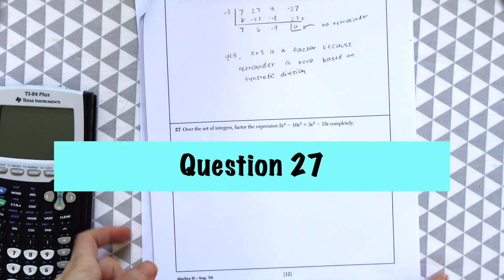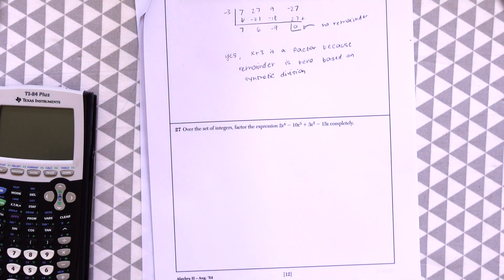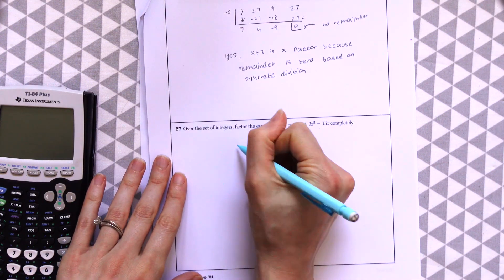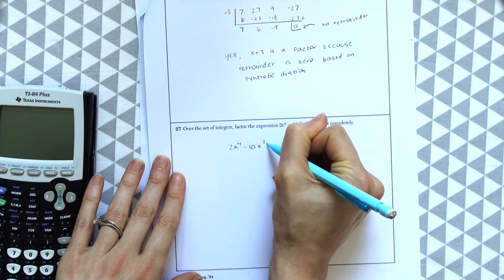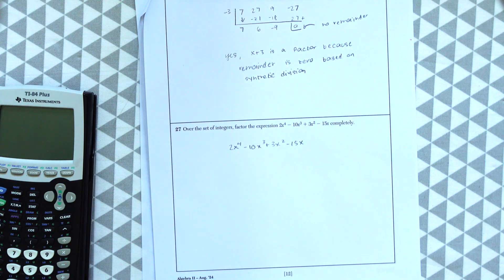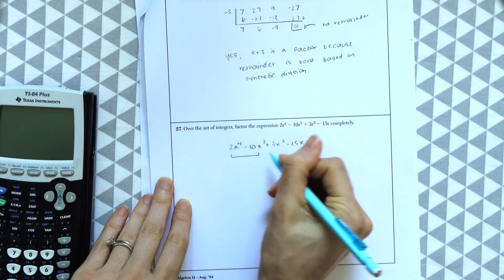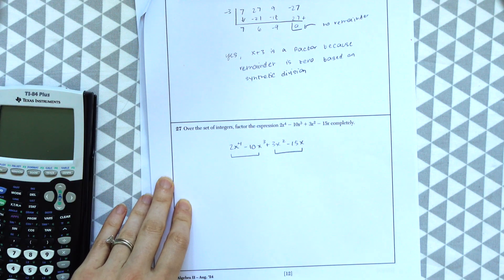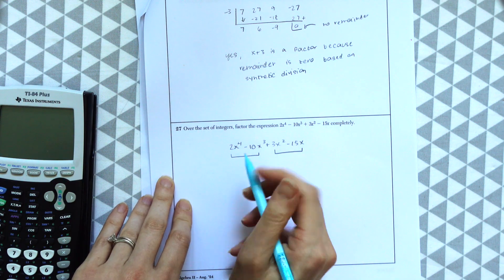Question 27. Over the set of integers, factor the expression 2x raised to the 4th minus 10x cubed plus 3x squared minus 15x completely. So let's write this out first. The first thing I'm going to want to do is factor by grouping.